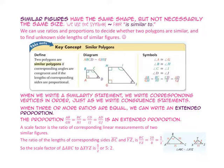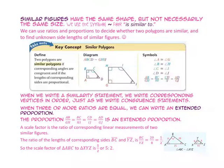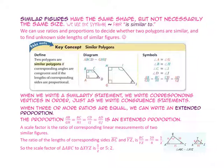Similar figures have the same shape but not necessarily the same size. We use this symbol for 'is similar to.' We can use ratios and proportions to decide whether two polygons are similar and to find unknown side lengths of similar figures. Two polygons are similar polygons if corresponding angles are congruent and if the lengths of the corresponding sides are proportional.